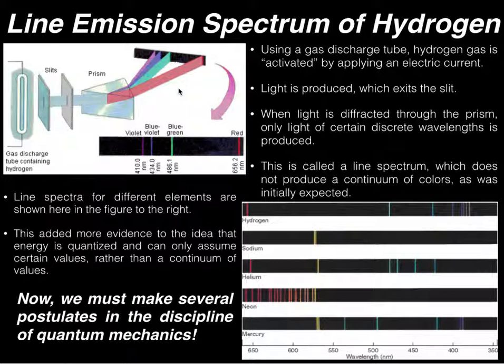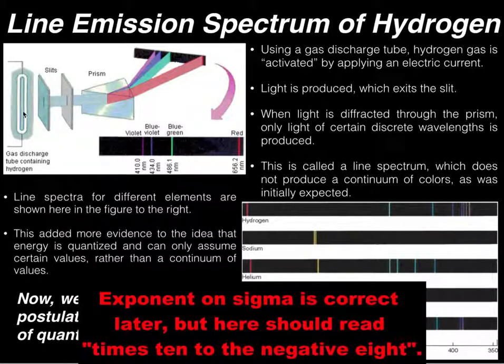So if energy was not quantized, if this light energy was not quantized, then you would just see a rainbow on here, like the complete rainbow. But what you see is when they activate the hydrogen gas with the electric current, the light is emitted, it goes through the prism, you only see a few marks.